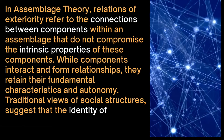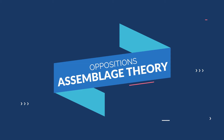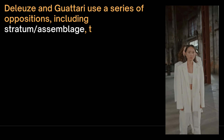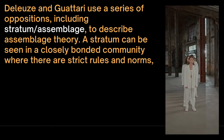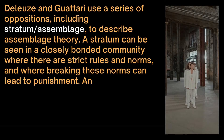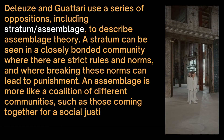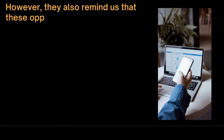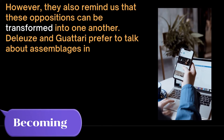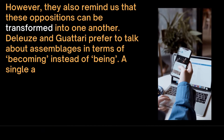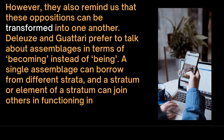Traditional views of social structures suggest that the identity of components is defined by their relationships within the system. Deleuze and Guattari use a series of oppositions, including stratum and assemblage, to describe assemblage theory. A stratum can be seen in a closely bonded community with strict rules and norms where breaking them can lead to punishment. An assemblage is more like a coalition of different communities, such as those coming together for a social justice movement. Deleuze and Guattari also remind us that these oppositions can transform into one another, preferring to talk about assemblages in terms of becoming instead of being. A single assemblage can borrow from different strata, and an element of a stratum can join others functioning in a different assemblage.